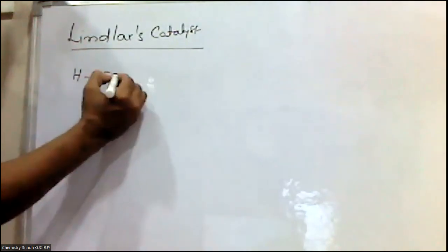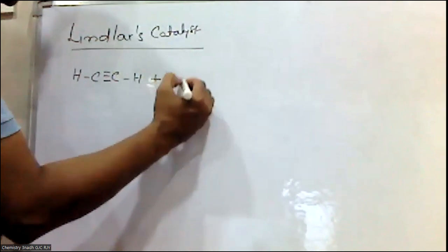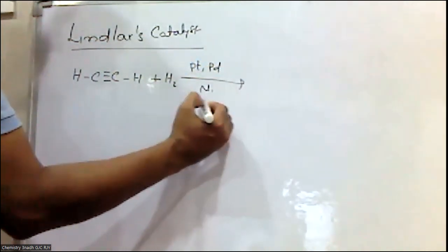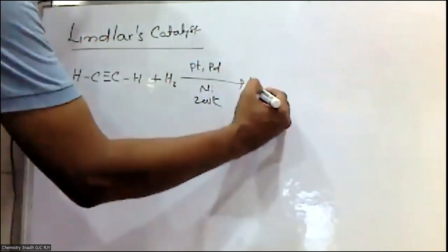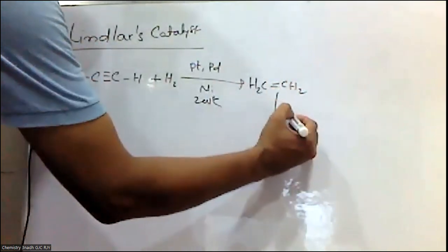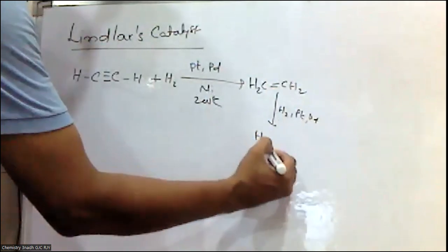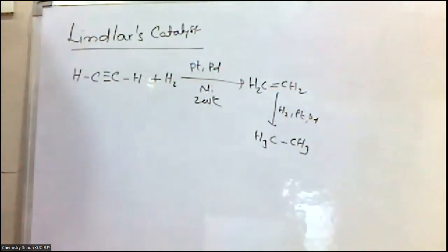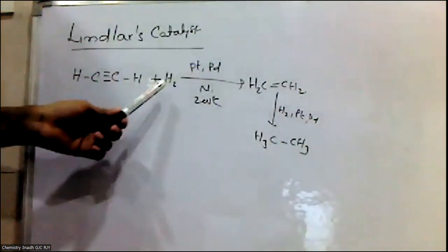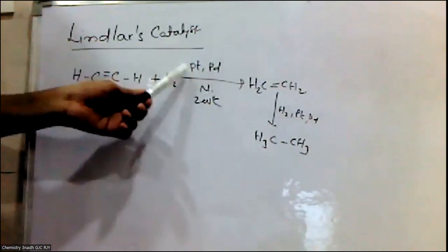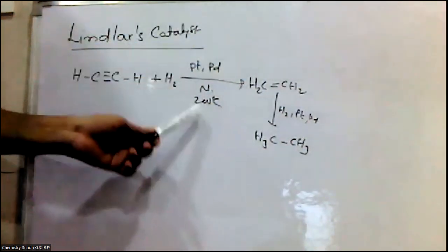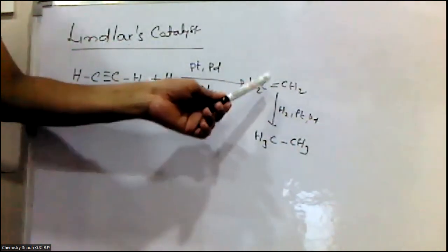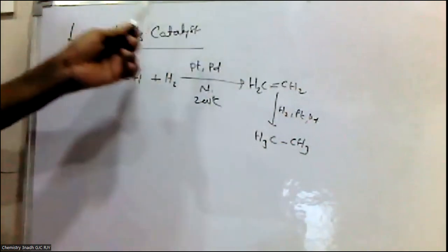Alkynes are unsaturated hydrocarbons having a carbon-carbon triple bond. On hydrogenation in the presence of palladium, platinum, or nickel at 200°C, alkynes initially give alkenes, which on further hydrogenation in the presence of these catalysts give alkanes.